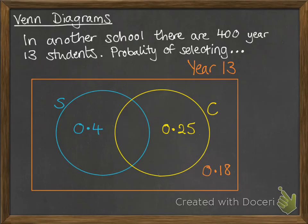So the probability of selecting a student that does both statistics and calculus, well, all of the probabilities that are possible need to add up to 1. So if we do 1 minus the probabilities we've got already, we'll get 0.17.